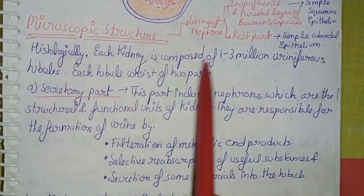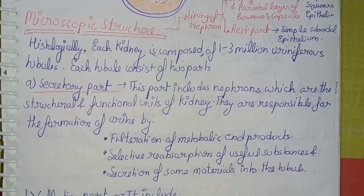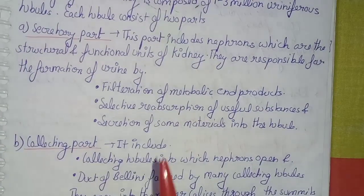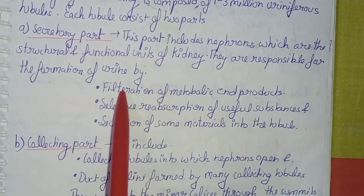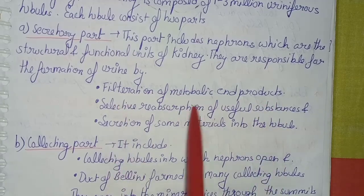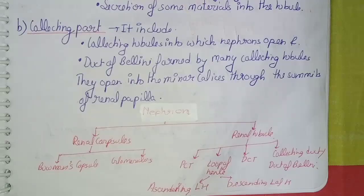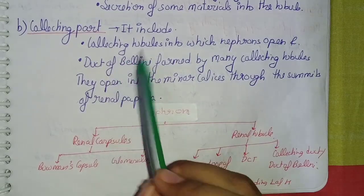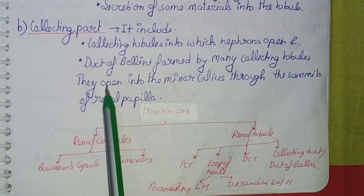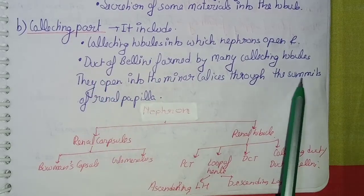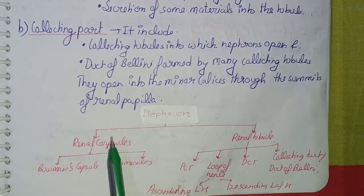Coming to the microscopic structure: histologically, each kidney is composed of 1 to 3 million uriniferous tubules. Each tubule consists of two parts: a secretory part and a collecting part. The secretory part includes nephrons, which are the structural and functional units of the kidney. They are responsible for the formation of urine by filtration of metabolic end products, selective reabsorption, and secretion of some material into the tubule.